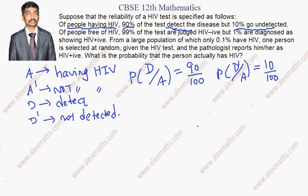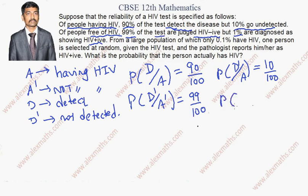The second part: of people free of HIV, that is P(A dash). 99% of the test are judged HIV negative, meaning it is not detected, so P(D'|A') = 99/100. One percentage are diagnosed as showing HIV positive — the disease is not there but it is detected as having the disease — which is P(D|A') = 1/100.